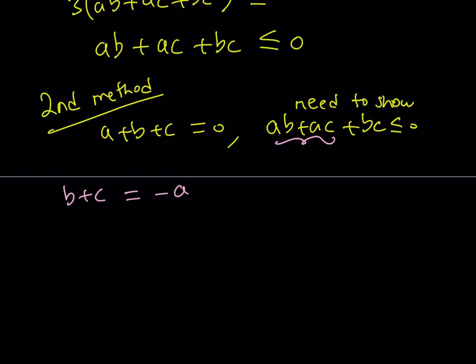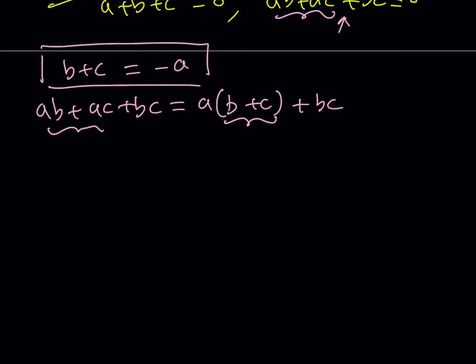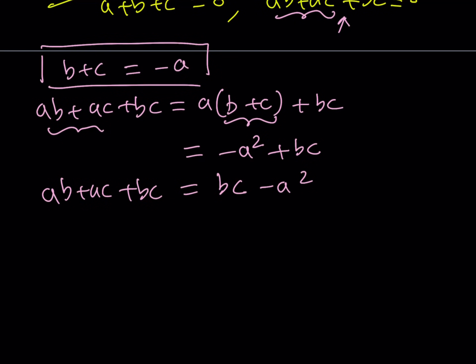I'm going to take the expression ab plus ac plus bc and factor out the a, giving a times (b plus c) plus bc. The purpose of doing this is to take advantage of the fact that b plus c is equal to negative a. So I can replace b plus c with negative a, giving negative a squared plus bc, or equivalently bc minus a squared. So ab plus ac plus bc can be written as bc minus a squared, given that a plus b plus c equals zero. Proving ab plus ac plus bc is less than or equal to zero is therefore equivalent to proving bc minus a squared is less than or equal to zero.